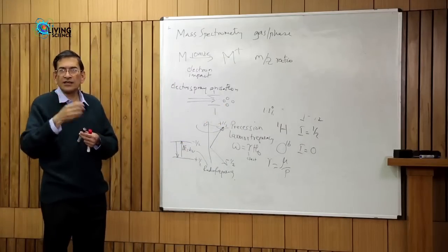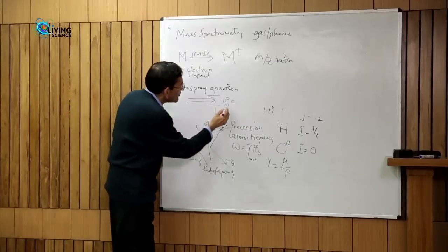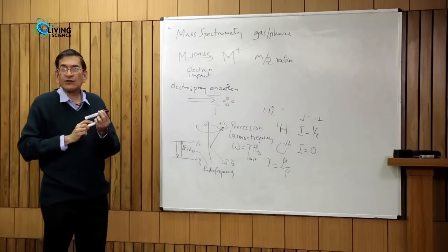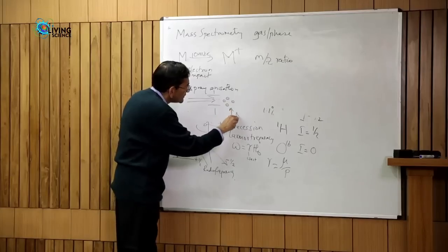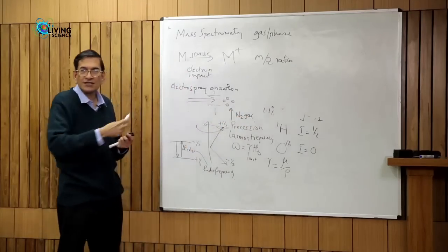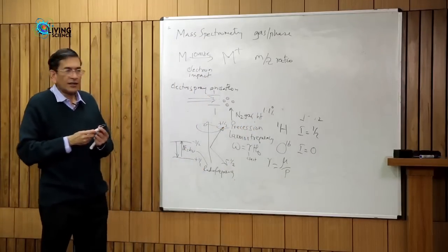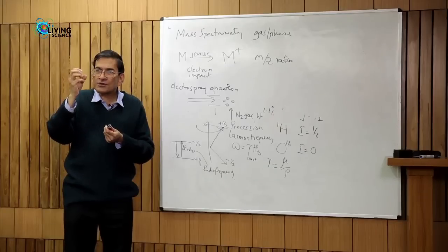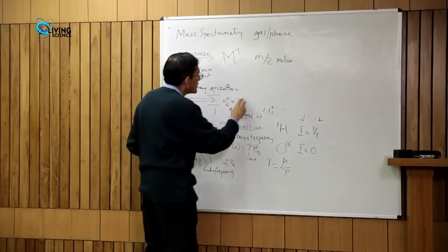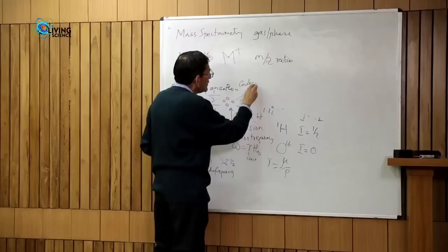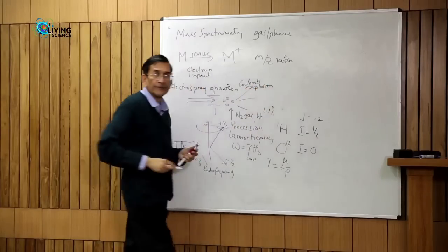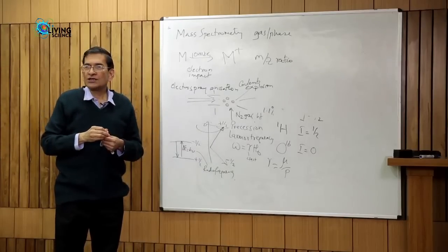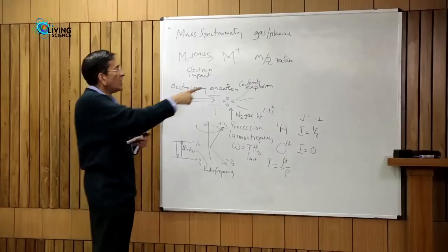The little droplets contain the solvent and the solute — if you are studying proteins, there will be small protein molecules inside. These are now in the gas phase. In a perpendicular direction, you introduce nitrogen gas, possibly heated a little. When the nitrogen gas impinges on the droplets, the water evaporates. As the water evaporates, the droplets become smaller and smaller until at some point you have what is called a Coulomb explosion, where the charged protein molecules come so close that they repel one another and explode, leaving naked protein molecules in the gas phase.